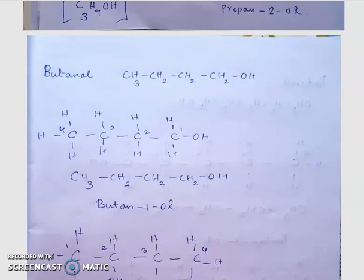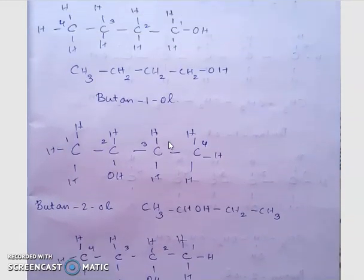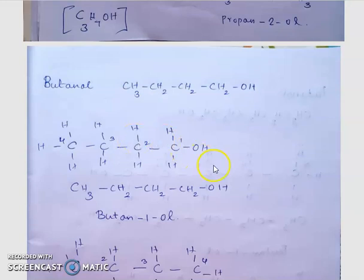In the previous video we discussed how to write alcohols: methanol, ethanol, and propanol. Next is butanol. Butanol means it contains four carbon atoms and has a functional group OH. Butane is C4H10, but now we have C4H9OH because one hydrogen is replaced by the OH functional group.